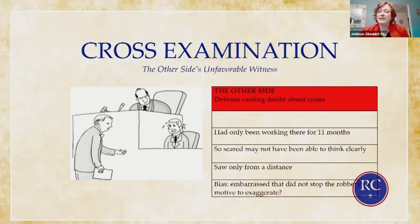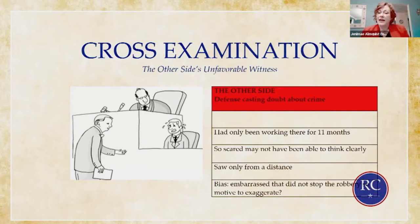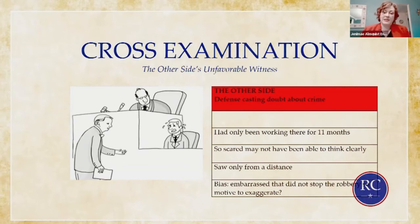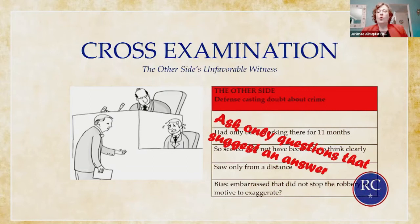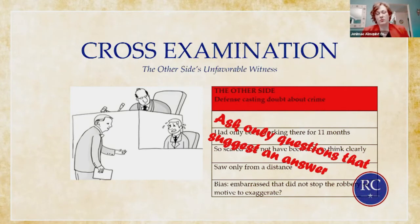In cross-examination, when you're attacking a witness on the other side, you only want to ask questions that suggest an answer. Those are called leading questions. We're going to go into both of these kinds of questions in more detail. The person on cross-examination might be asked about the items from the unfavorable side of your list.